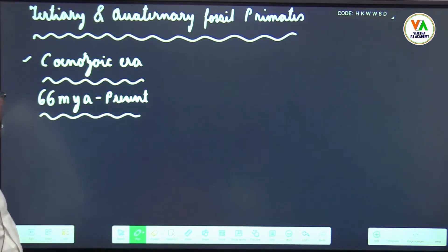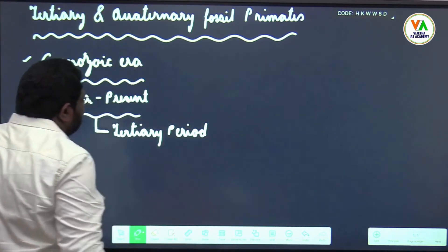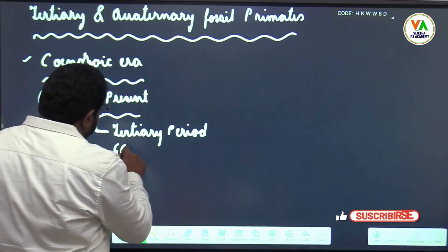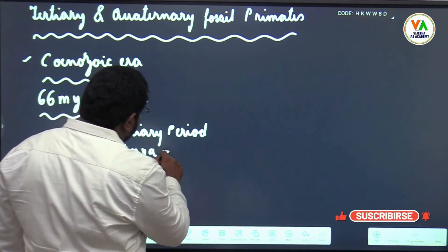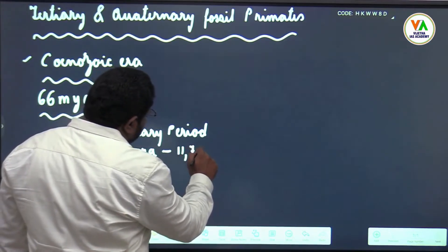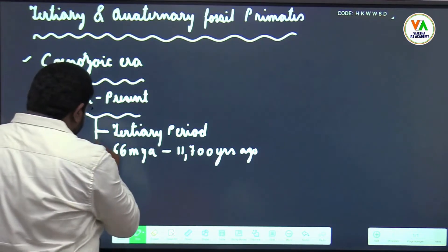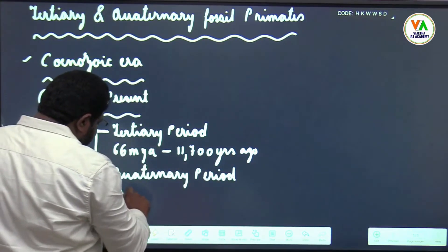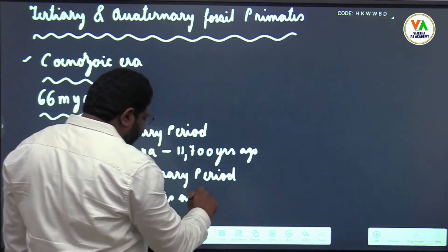The Cenozoic era has these two periods: tertiary and quaternary period. According to this standard, the tertiary period is 66 million years ago to 11,700 years ago, and the quaternary period is 11,700 years ago to present.